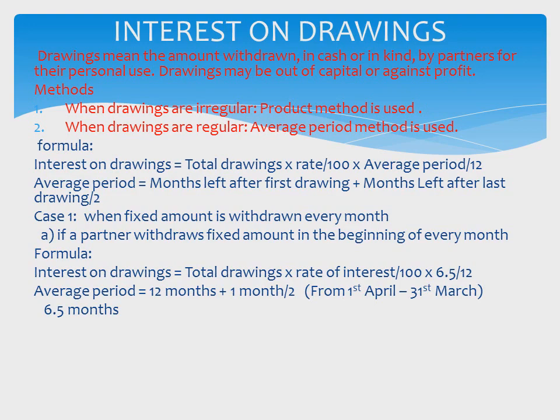How is 6.5 calculated? Months left after the first drawing: first drawing is made on 1st April, so from 1st April to 31st March there are 12 months. Months left after the last drawing: last drawing is made on 1st March, so from 1st March to 31st March there is 1 month. So (12 + 1) / 2 = 6.5 months.